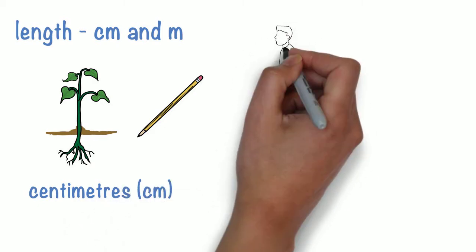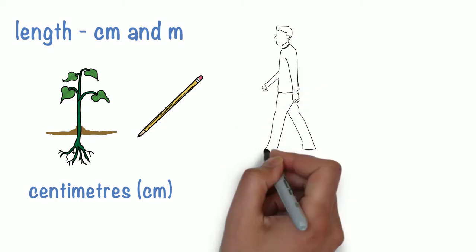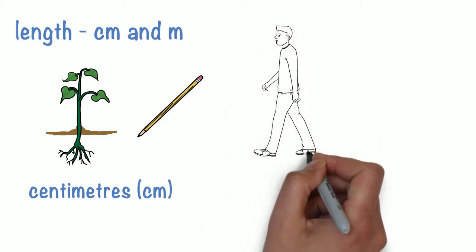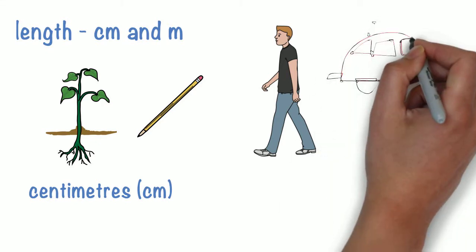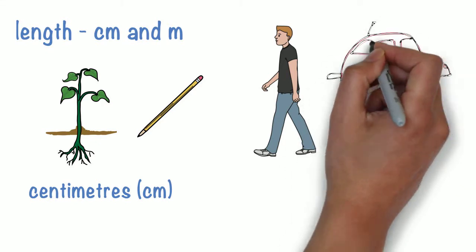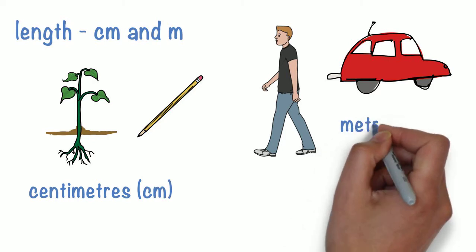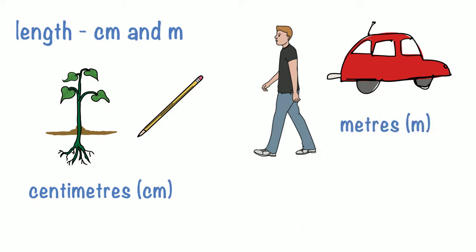Metres are used to measure larger things, like a person, or even the length of a car, or a house, or a door frame. We can measure centimetres and metres using rulers, or a tape measure.